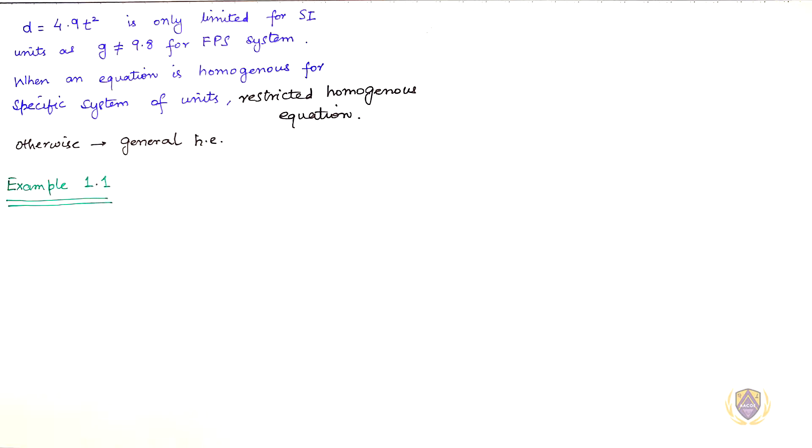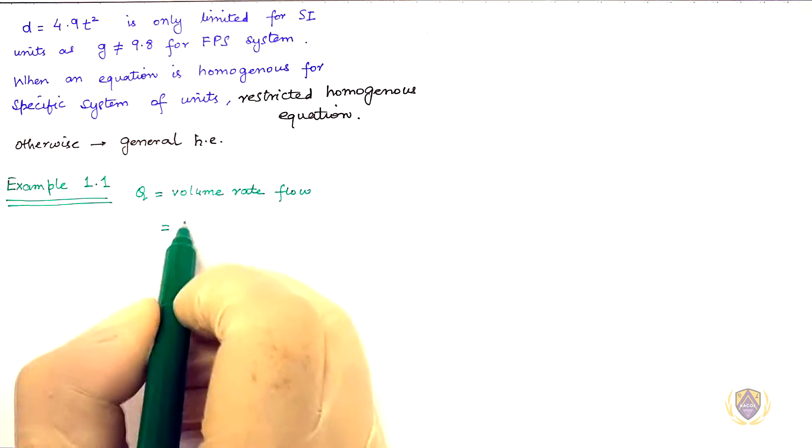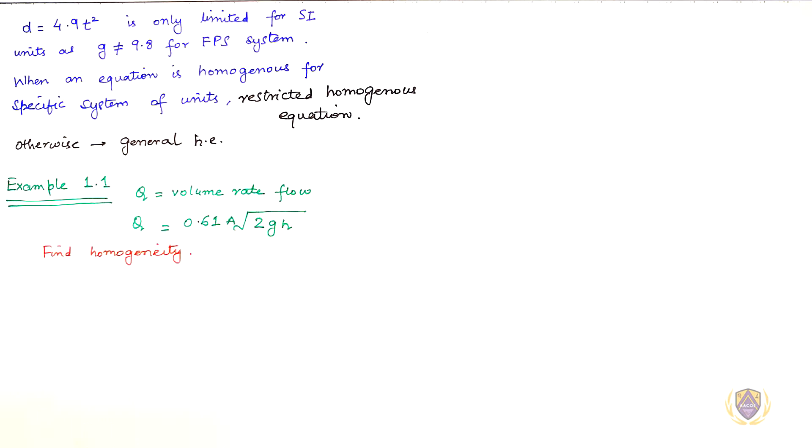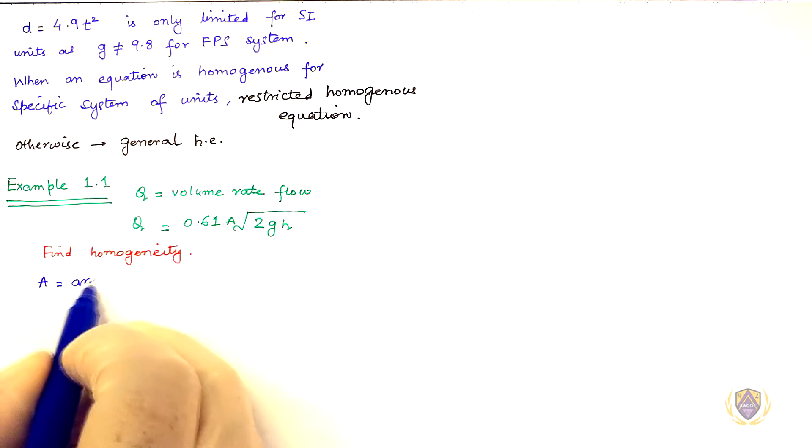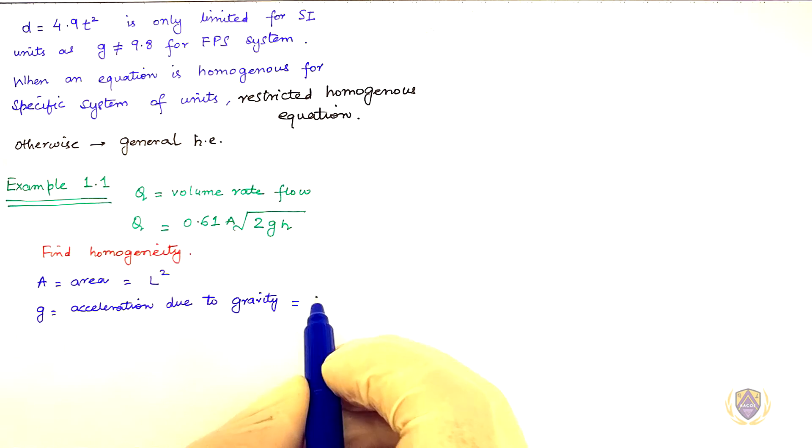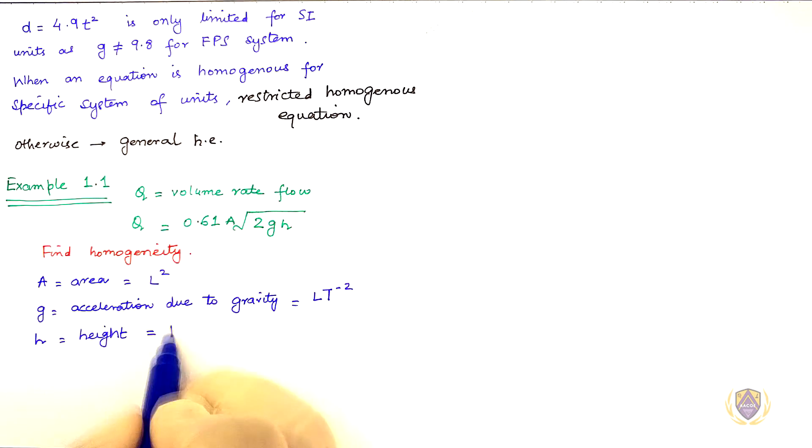Example 1.1: Q is volume rate flow given by following expression, and we are to find homogeneity of this equation. A is area given by L square, G is acceleration due to gravity given by L T minus 2, and H is height as L.